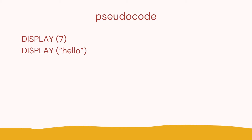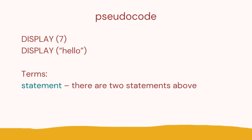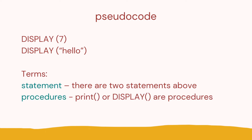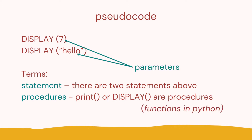In pseudocode we use the word DISPLAY, so we'd write DISPLAY 7 and DISPLAY hello. These are two statements. Print or display are procedures — in programming where you see a word followed by brackets, that's normally called a function, or in pseudocode a procedure. What you put inside the brackets is what you want to print — you're passing that to the computer — and those values are called parameters. So key terms for the exam: statement, procedure, and parameter.